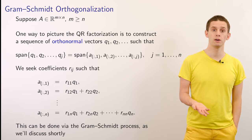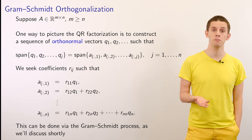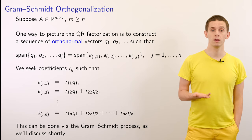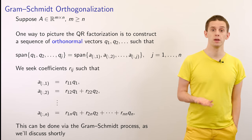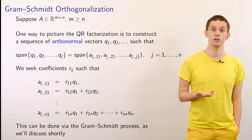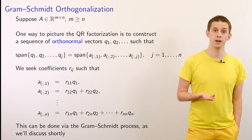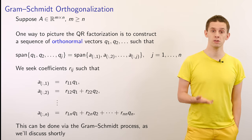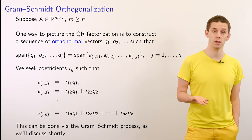Let's now look at computing the QR factorization of our matrix A of size m by n, where m is greater than or equal to n. One way to picture the QR factorization is to construct a sequence of orthonormal vectors q1, q2, and so on, so that the span of any set q1 to qj is the same as the span of the first j columns of our matrix A.